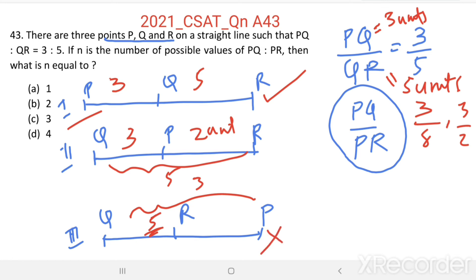Two arrangements are possible for P, Q, and R. Therefore, the number of possible values for PQ by PR equals 2. Option B is the right answer.